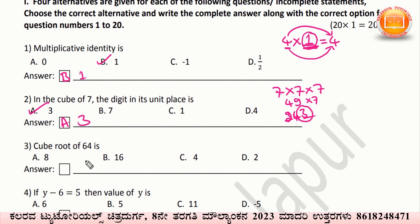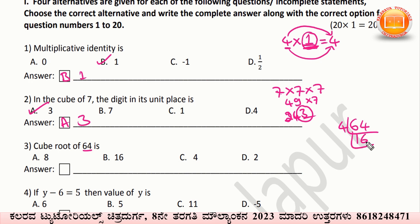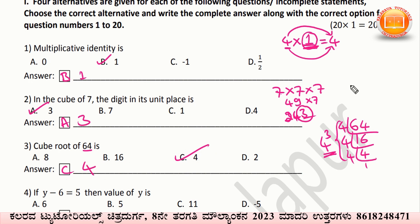Now, cube root of 64 is given. Cube root means: for which number you have to multiply three times to get 64. You divide 64 by 4, and 4 into 4 into 4 gives you 64. That means 4 cubed equals 64, so we have to multiply 4 three times. Option C — 4 — is the correct answer.